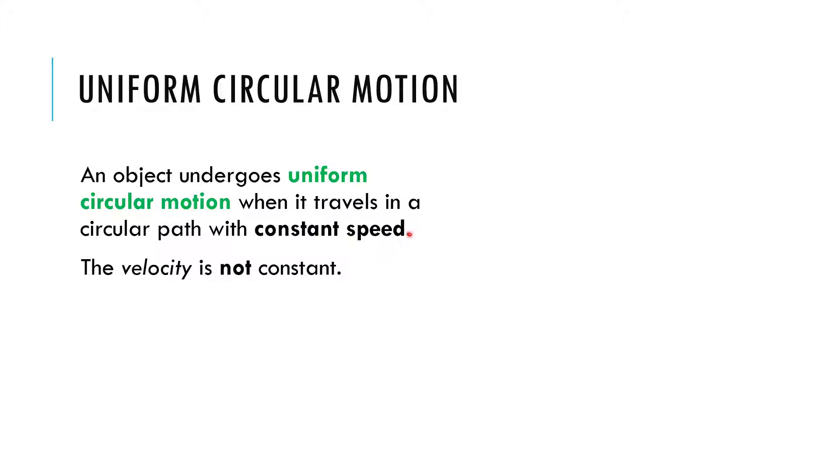Velocity is speed with direction. And so hopefully it makes sense that if we're moving in a circle, the direction of your motion is constantly changing. So therefore the velocity is changing. Even though the size of the vector won't be changing, the direction changes.